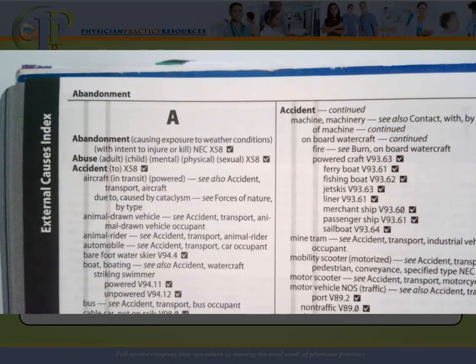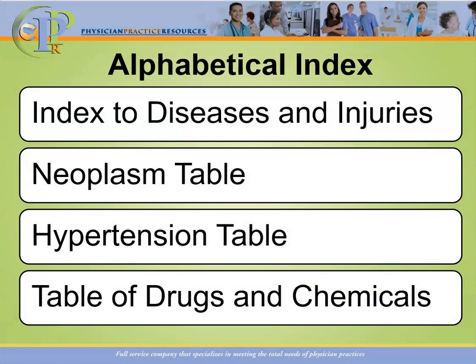Let's review. The alphabetical index has four parts: the index to diseases and injuries, the neoplasm table, the table of drugs and chemicals, and the external causes index. Now let's spend some time understanding the index to diseases and injuries, which is one of the areas we're going to use a lot.